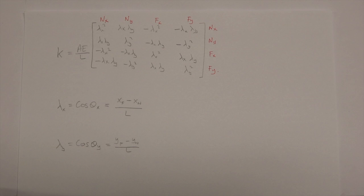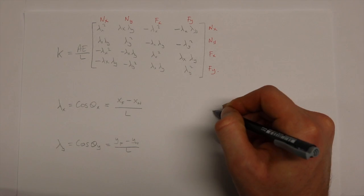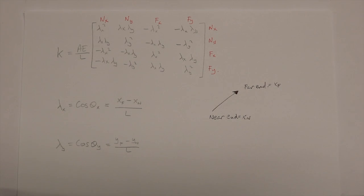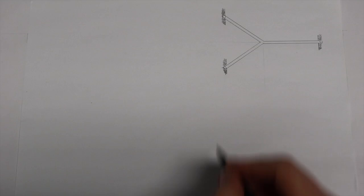In red, lambda x and lambda y are the components which make up the member stiffness matrix. These are directional cosines which can be calculated by the angle of the member in relation to the global x and y coordinates, or by using the near and far coordinates of each member.